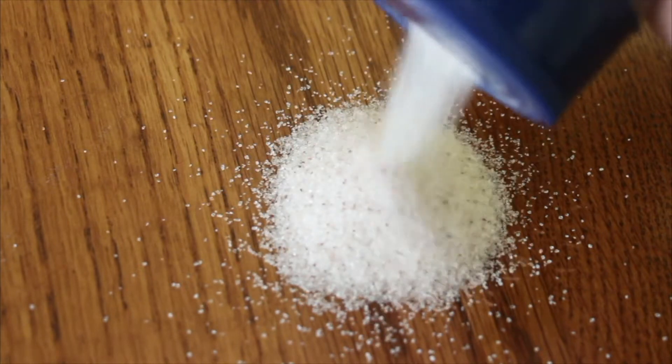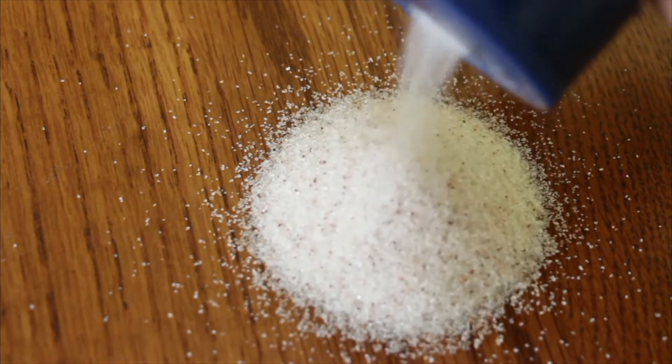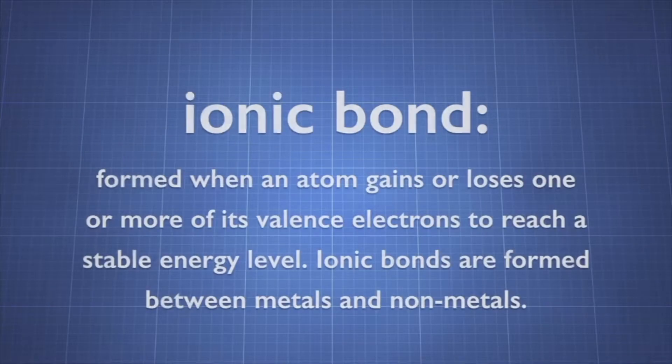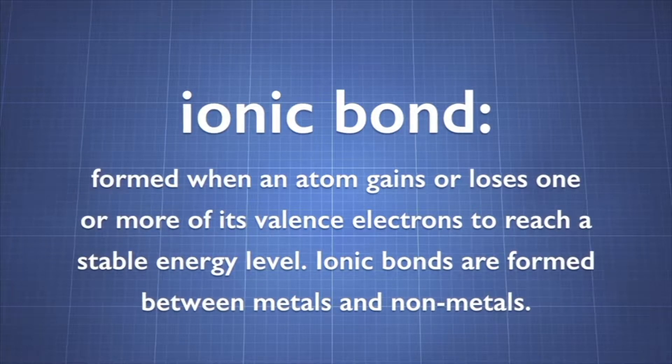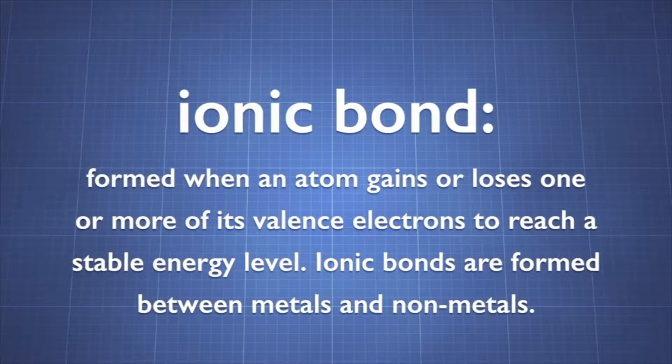Table salt is an ionic compound. A salt molecule is composed of one sodium ion and one chlorine ion. An ionic bond is formed when an atom gains or loses one or more of its valence electrons to reach a stable energy level. Ionic bonds are formed between metals and nonmetals.